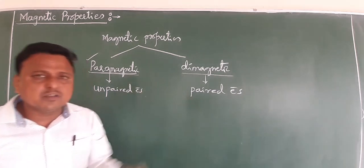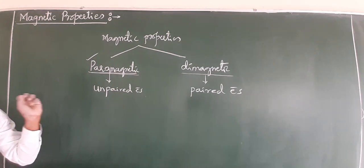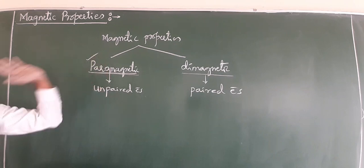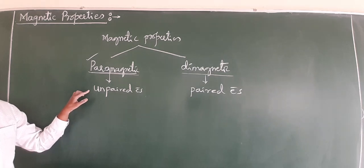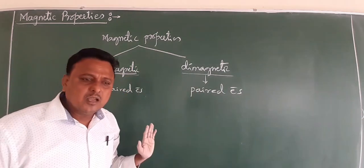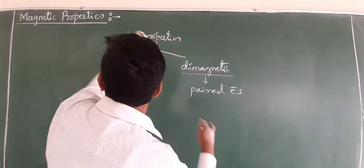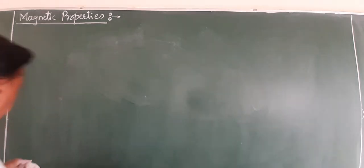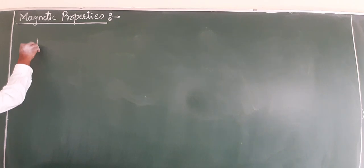A simple question: why do d-block elements show paramagnetic nature, or why are transition metals paramagnetic? The answer is simple: because of unpaired electrons. Paramagnetic is due to unpaired electrons, diamagnetic is due to paired electrons. Based on this, we have a calculation of magnetic moment.